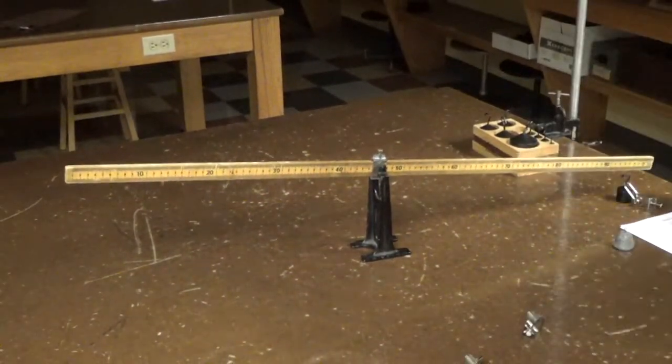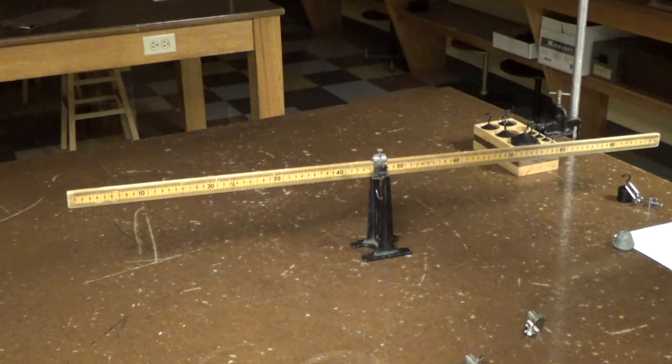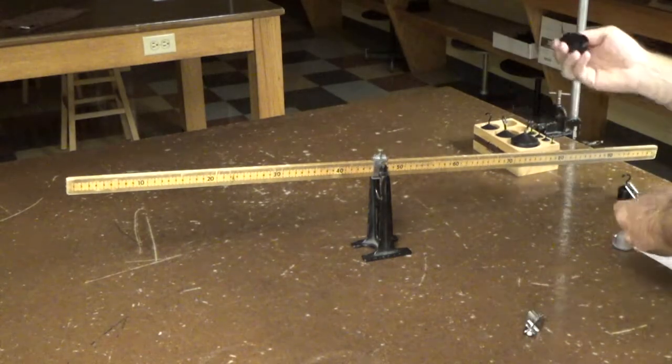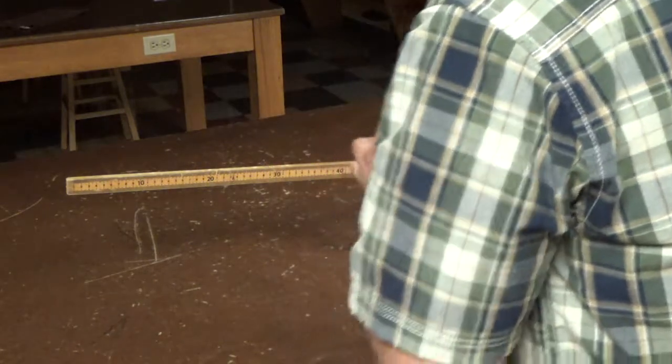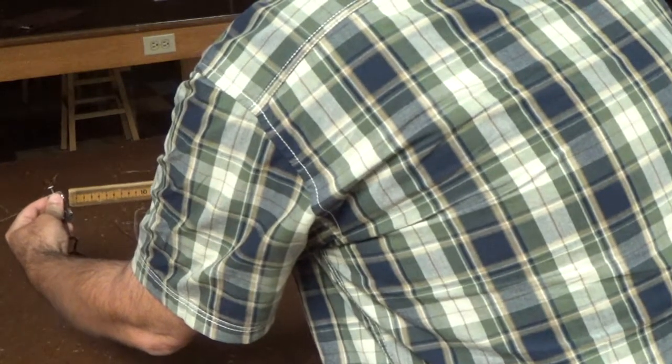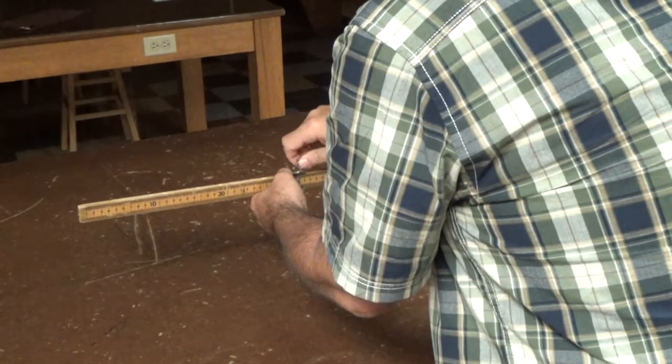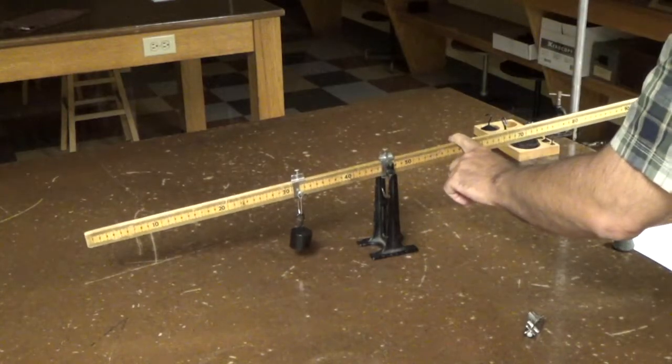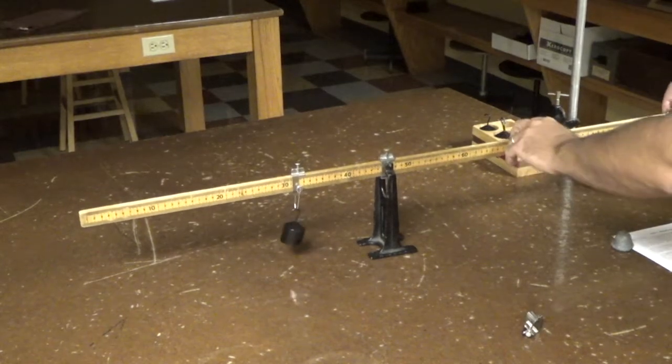And in the first part, what we're told to do is we're told to hang 200 grams, 15 centimeters from the fulcrum. So I would take 200 gram mass with the clip, and I would put it 15 centimeters from the fulcrum. Just assume that that's about 15 centimeters. And then what we're going to do, we're going to balance this with 100 grams over here.